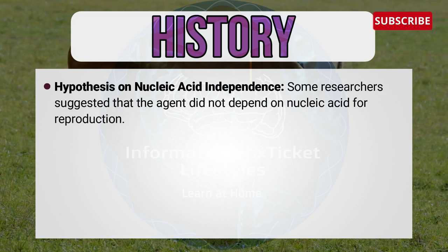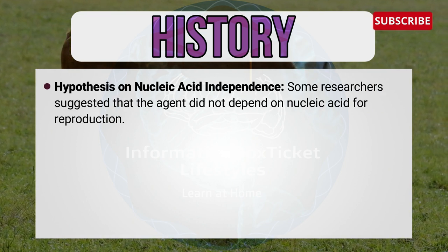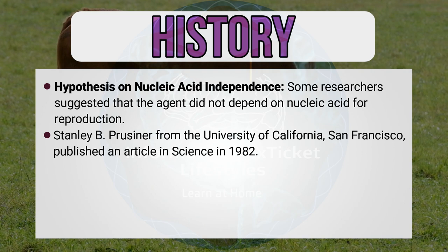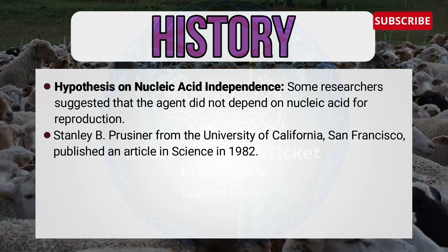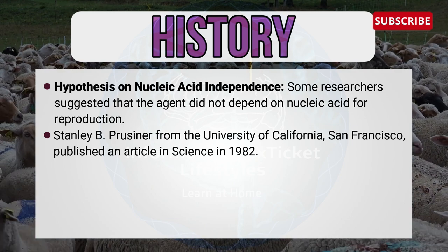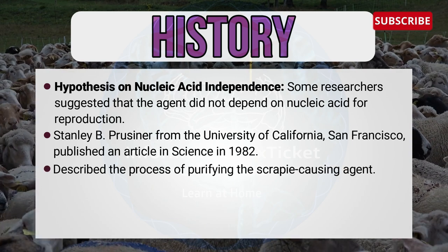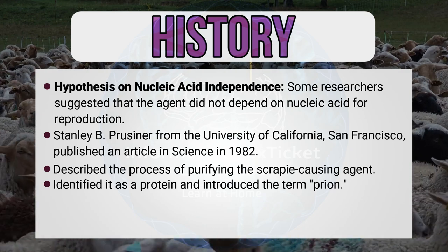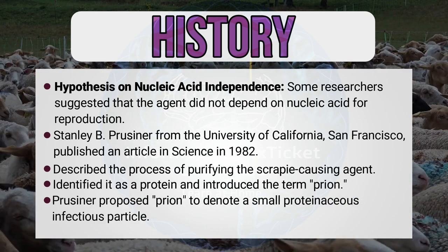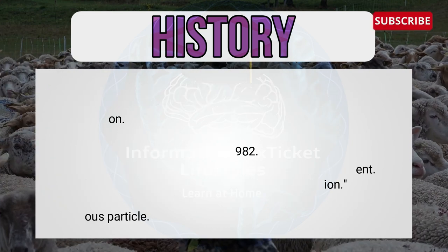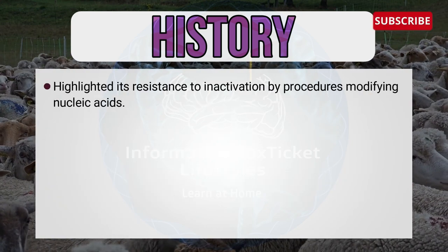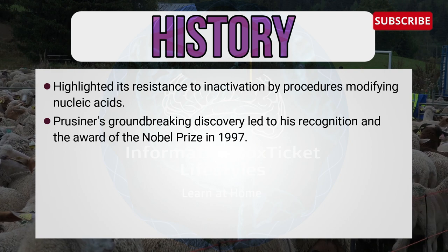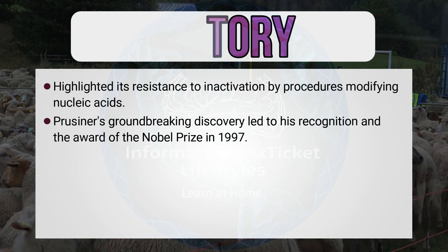Some researchers suggested that the agent did not depend on nucleic acid for reproduction. Stanley B. Prusiner from the University of California, San Francisco, published an article in Science in 1982. It described the process of purifying the scrapie-causing agent, identified it as a protein, and introduced the term prion. Prusiner proposed 'prion' to denote a small proteinaceous infectious particle, highlighting its resistance to inactivation by procedures modifying nucleic acids. Prusiner's groundbreaking discovery led to his recognition and award of the Nobel Prize in 1997.